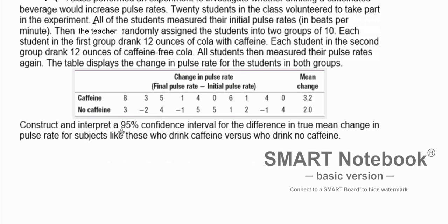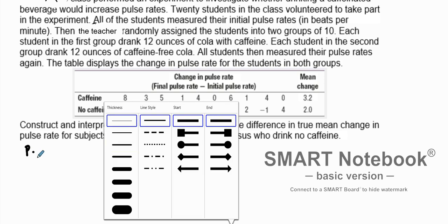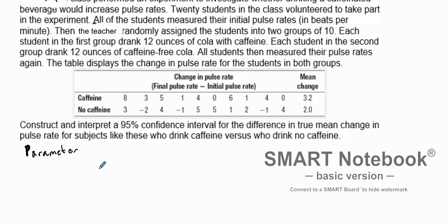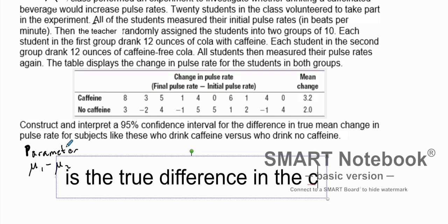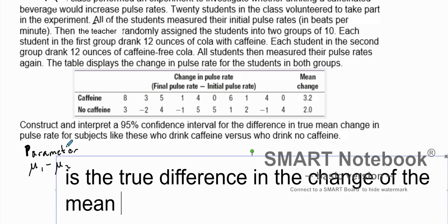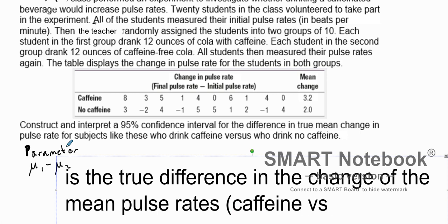Here is the difference from the beginning to the end for caffeine and no caffeine. From here, we're going to construct a 95% confidence interval for the difference in true mean change in pulse rate for subjects. Our parameter is going to be mean one minus mean two — the true difference in the change of the mean pulse rates for caffeine versus no caffeine.